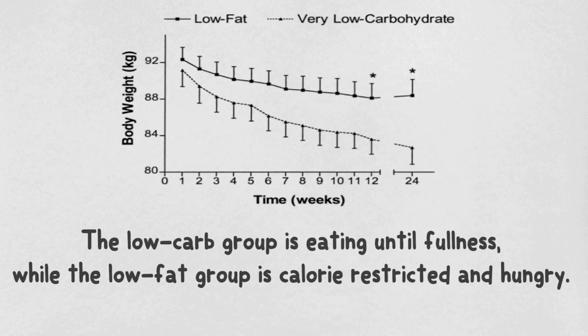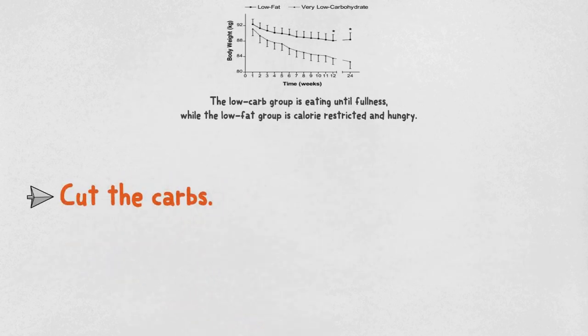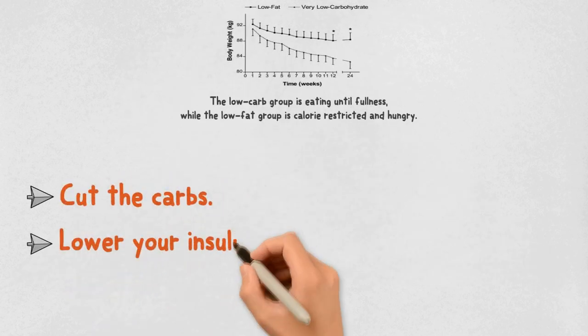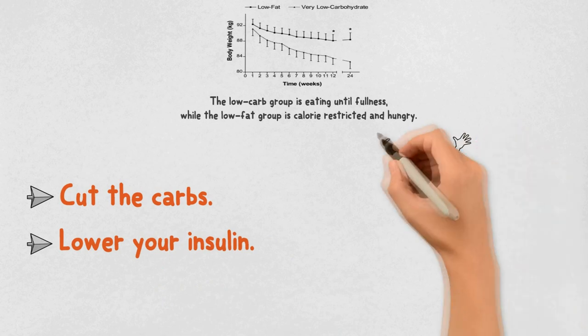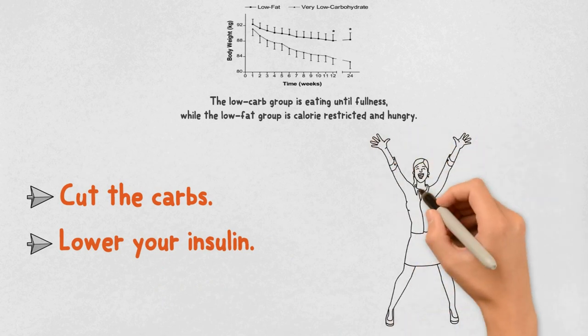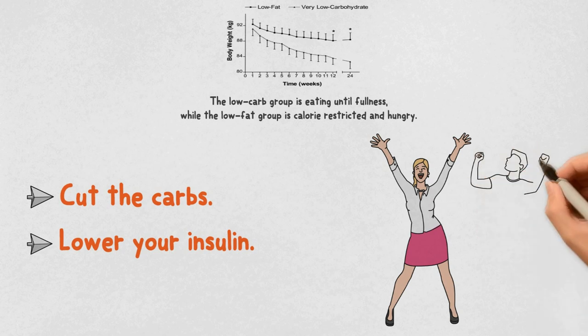The low-carb group is eating until fullness, while the low-fat group is calorie-restricted and hungry. Cut the carbs, lower your insulin and you will start to eat less calories automatically and without hunger. Put simply, lowering your insulin puts fat loss on autopilot.